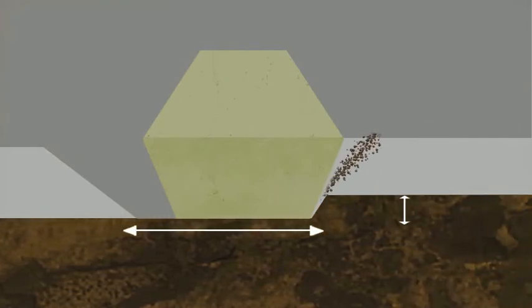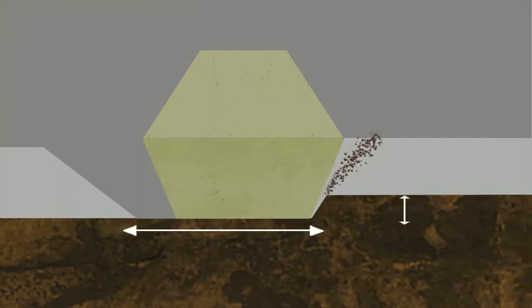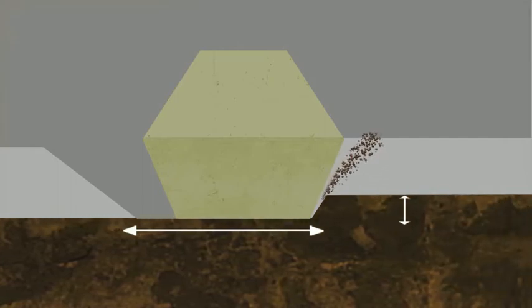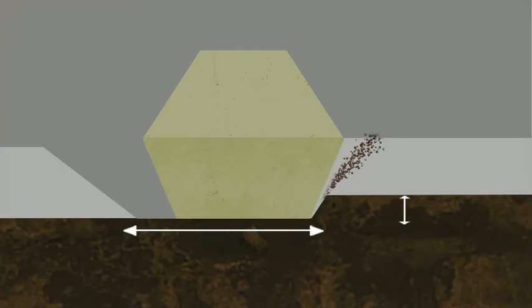Cutting takes place ahead of each diamond, with rock material being removed from the rock surface, while rubbing takes place across the wear-flat surface of the diamond.